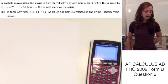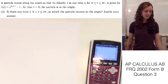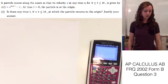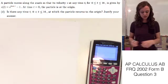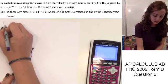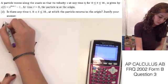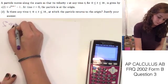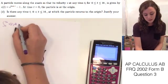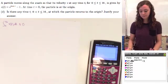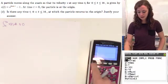Part d asks if there's any time t between 0 and 16 at which the particle returns to the origin, and we need to justify our answer. So in order to do this, we're going to want to graph in our calculator the integral from 0 to 16 of the velocity function to ensure that there is no time at which that equals 0. So this is where we're going to graph it, and we can go ahead and put that in our calculator.